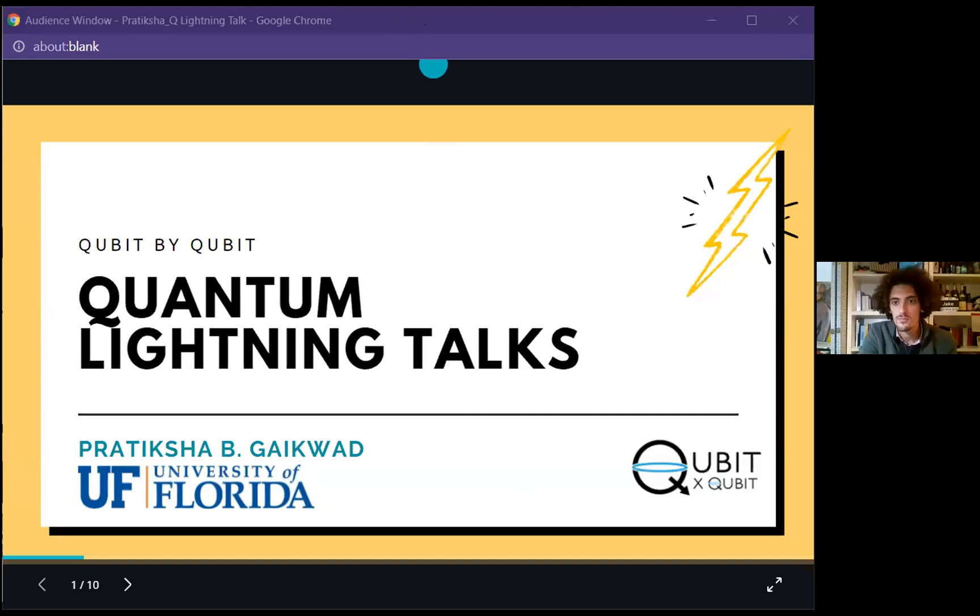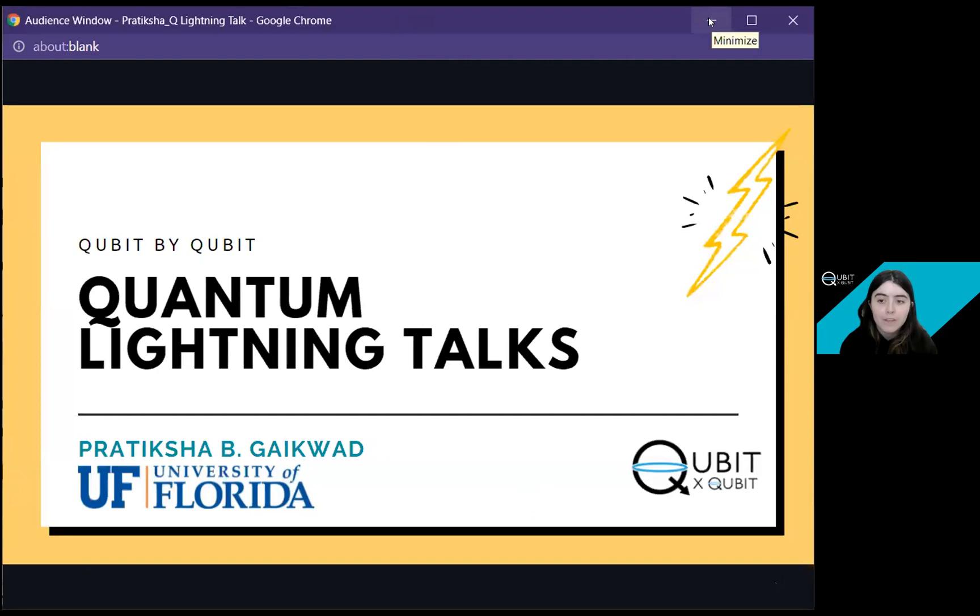Pratiksha is a first year graduate student at the University of Florida. Her current projects focus in the field of electronic structure theory or quantum chemistry and she's interested in working at the interface and intersection of quantum chemistry and quantum computing. Also really excited that Pratiksha is actually a Qubit by Qubit alumni. Last year Pratiksha took our course, so Pratiksha I'll turn it over to you.